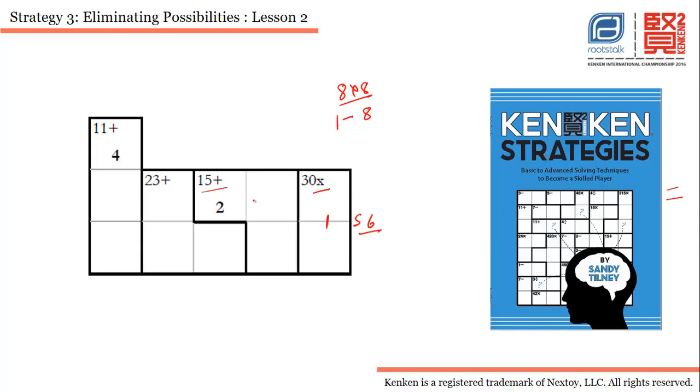It says 15 plus. We have three cells and one cell is already filled with 2. That means these two cells should add up to 13. So I'm writing 13 here. Possible combinations are 7, 6 or 8, 5.